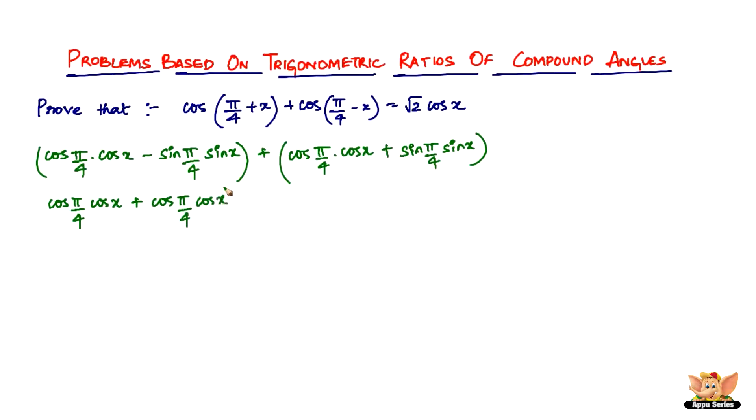So cos pi by 4 and cos x plus this sin pi by 4 sin x minus sin pi by 4 sin x. So this gets cancelled. All we've got left is this one. Cos pi by 4 cos x plus cos pi by 4 cos x. That is nothing but 2 cos pi by 4 cos x, right?